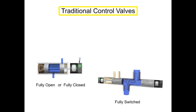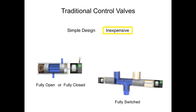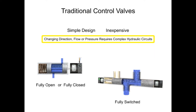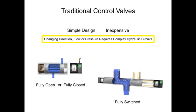Traditional control valves are of simple design and capability. Changing direction, flow, or pressure during machine operation would require a complex hydraulic circuit. Each desired direction, flow, or pressure would require an individual traditional valve to control it.